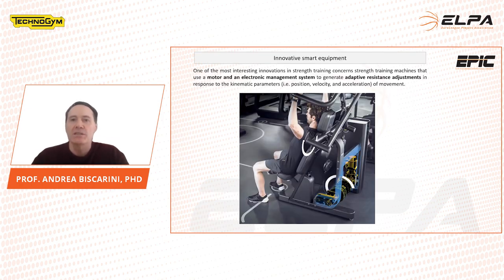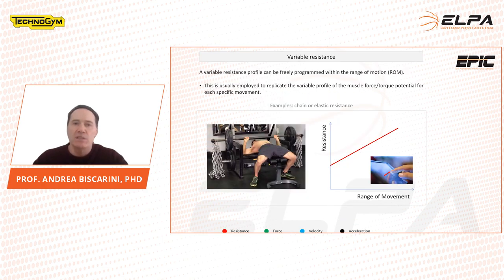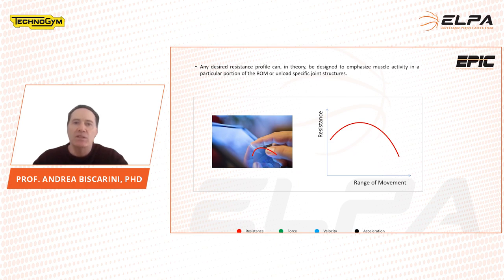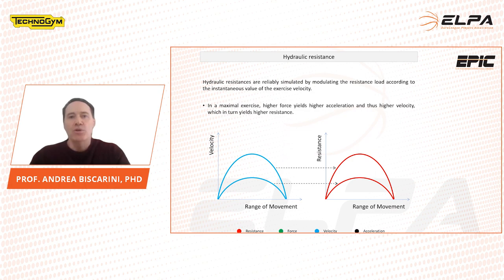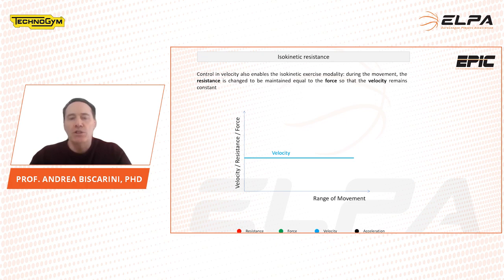Strength training machines that use a motor and an electronic management system can generate all the different kinds of resistance, including the inertial effects. These devices enable several advanced strength training modalities. For example, any variable resistance profile can be designed to match the human strength curves, to emphasize muscle activity in a particular portion of the range of motion, or to unload specific joint structures. Hydraulic and viscous resistances are simulated by designing a resistance proportional to the magnitude of the velocity or the square of its value.